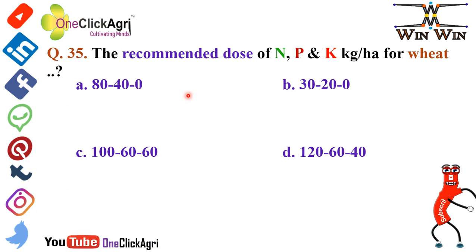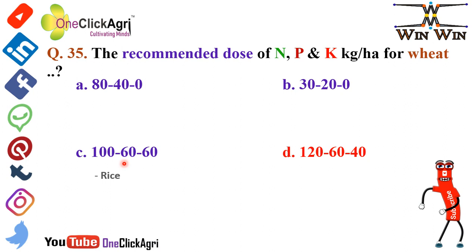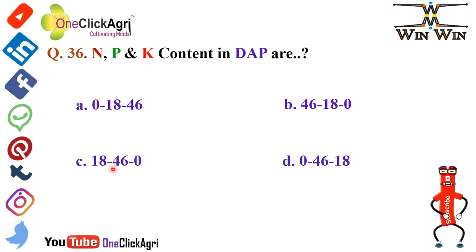Question number 35: The recommended dose of NPK kg per hectare for wheat is 120:60:40 N:P:K kg per hectare. The C option of 160:60 N:P:K kg per hectare is the recommended dose of rice — please remember this.